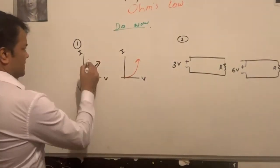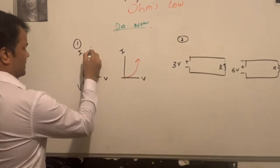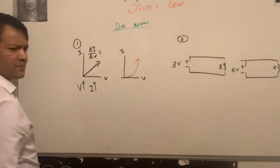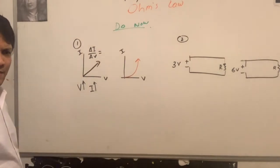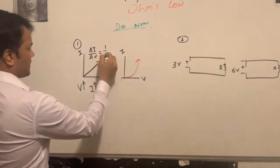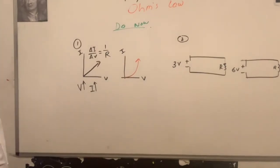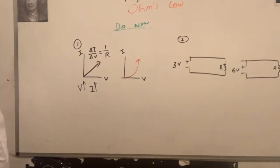It does tell you the slope. It tells us slope is one over R. So delta I over delta V is equal to the slope, one over R, because V over I is R. So the inverse of that should be the inverse of R.